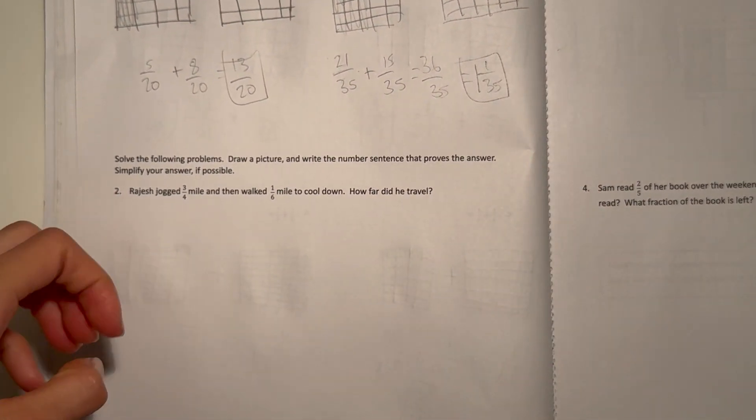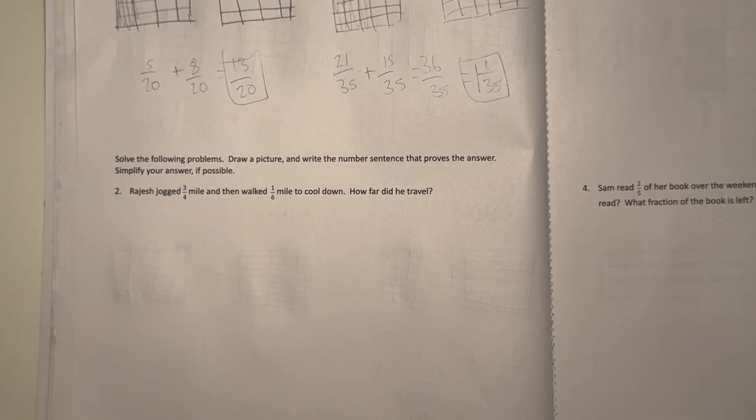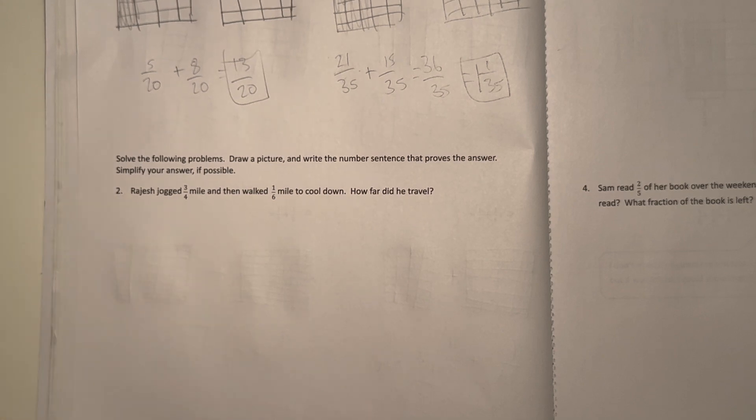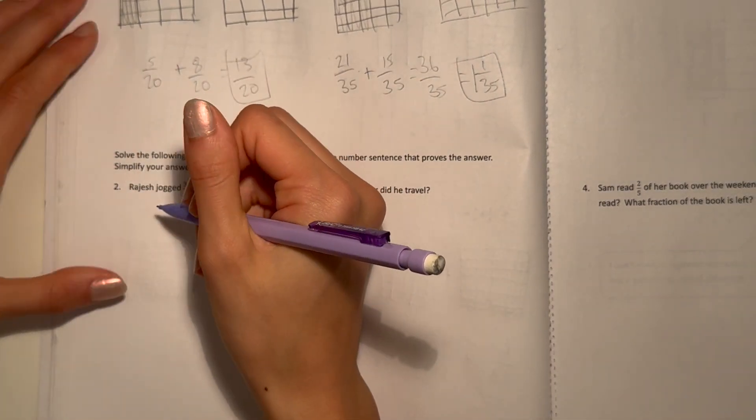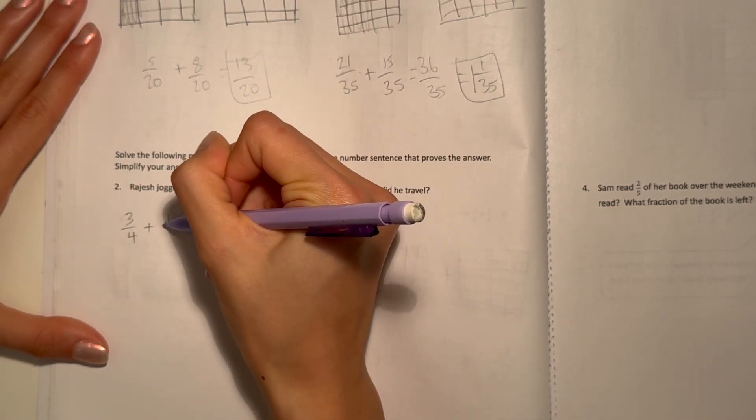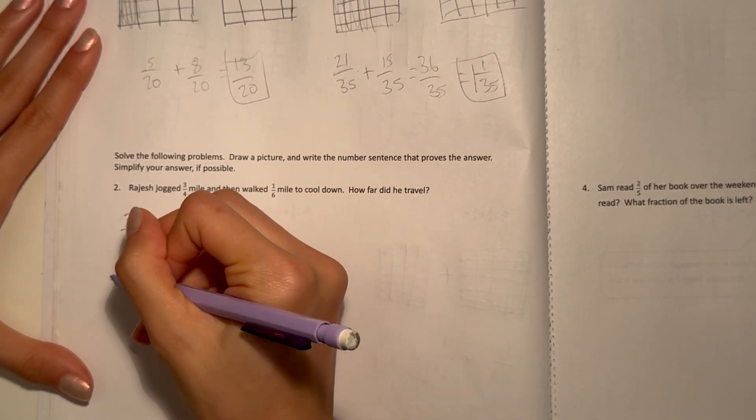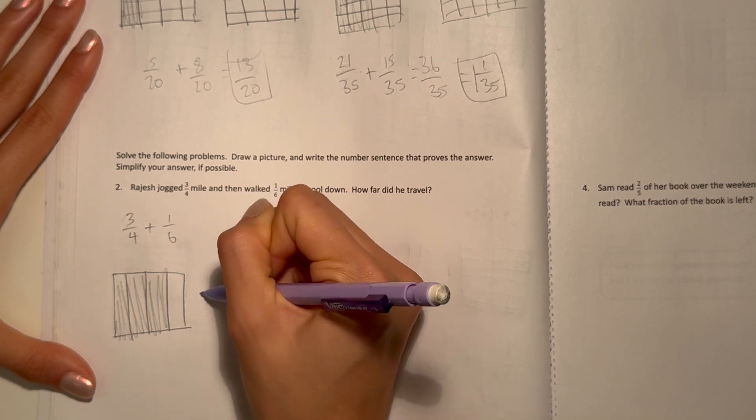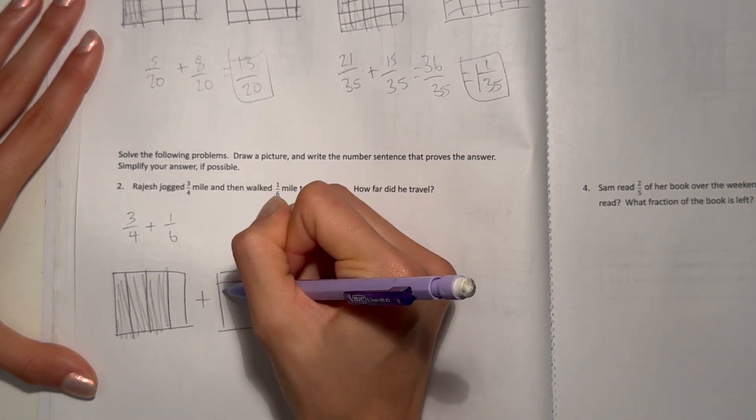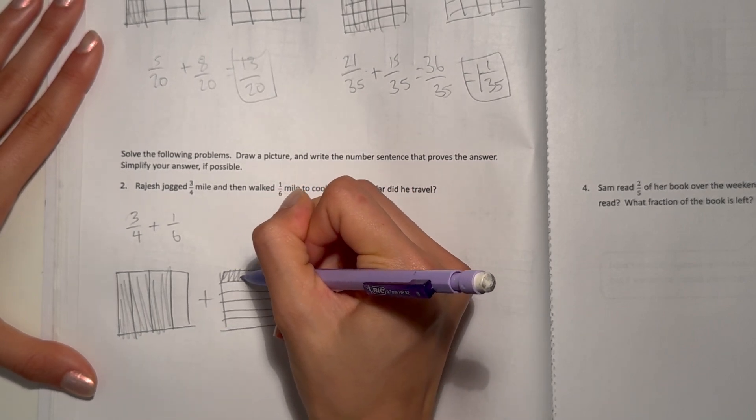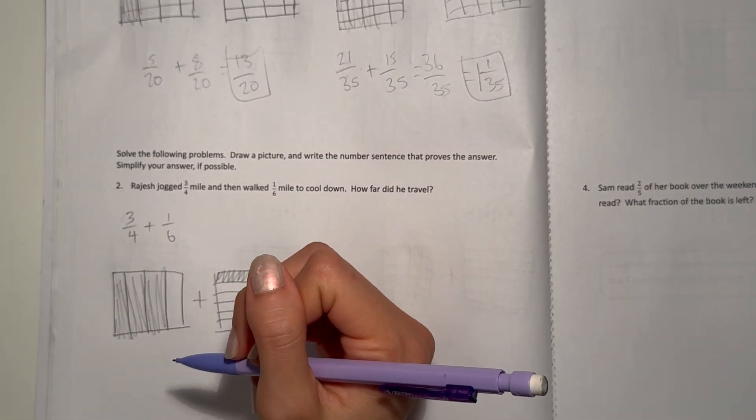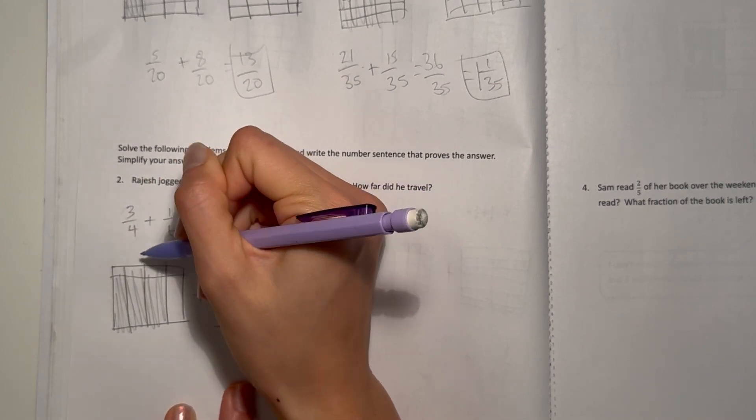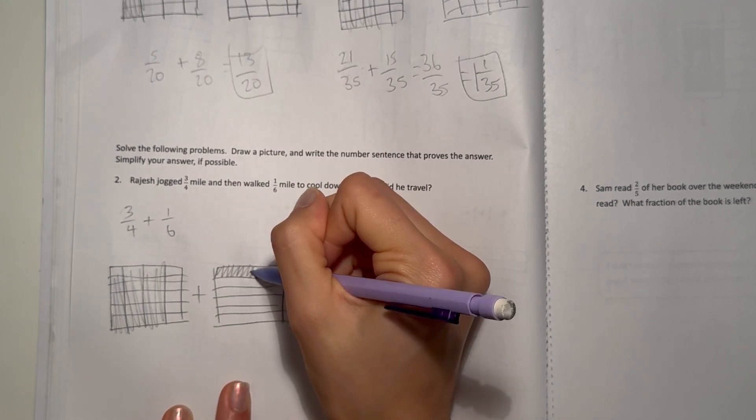Alright, alright next. Solve the following problems. Draw a picture and write the number sentence that proves the answer. Simplify your answer if possible. Alright let's see, number two. Josh jogged three-fourths mile and then walked one-sixth mile to cool down. How far did he travel? How far did he travel? Alright. Three over four plus one over six. First we can do it vertically. Three-fourths plus one-sixth.